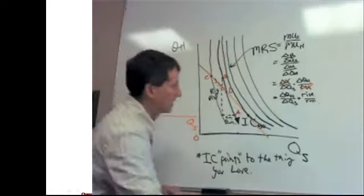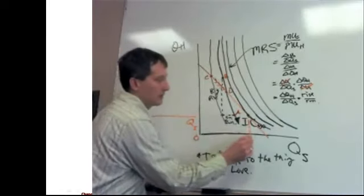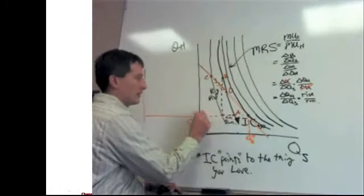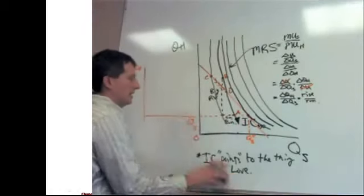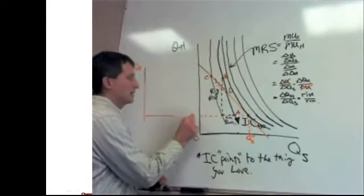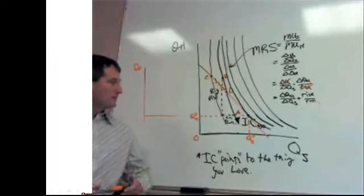And so, this then becomes consumer equilibrium. That is the optimal quantity of shoes, the quantity that maximizes utility, and this is the optimal quantity of hats. So, we call them Q-star and Q-S-star. Q-H and Q-S-star.